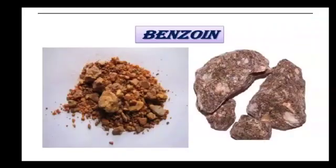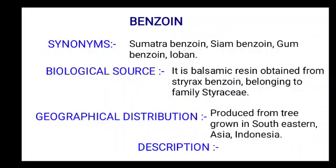Now we discuss the first drug, benzoin. Synonym of benzoin: Sumatra benzoin, Siam benzoin, gum benzoin and loben. Biological source: it is a balsamic resin obtained from Styrax benzoin belonging to family Styraceae. Parts used: balsamic resin. Species: Styrax benzoin. Family: Styraceae.